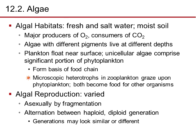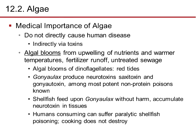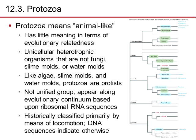Algal reproduction is varied — it can be asexual by fragmentation, with alternation between haploid and diploid generations. While algae don't directly cause human disease, they can indirectly affect humans through toxins. Algal blooms from upwelling nutrients in warmer temperatures, fertilizer runoff, or untreated sewage can produce red tides. The dinoflagellate Gonyaulax produces neurotoxins saxitoxin and gonyautoxin, among the most potent non-protein poisons known. Shellfish feed upon Gonyaulax without harm but accumulate the neurotoxin in their tissue. Humans consuming shellfish can suffer paralytic shellfish poisoning, and cooking does not destroy this toxin.